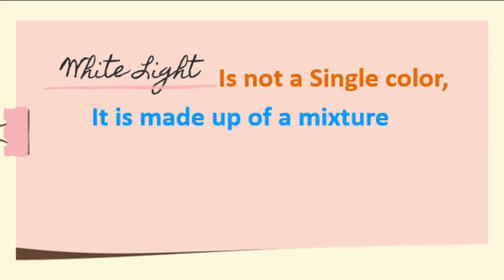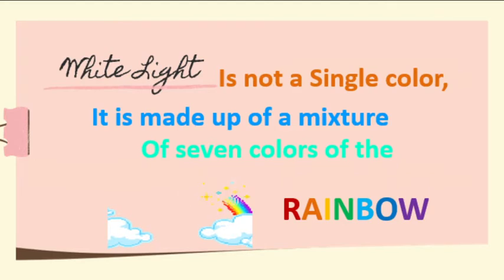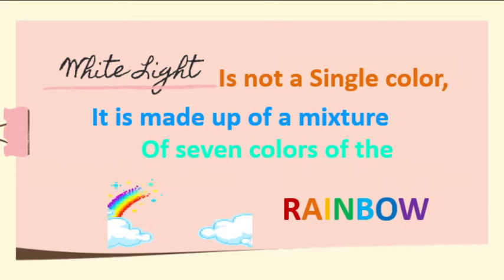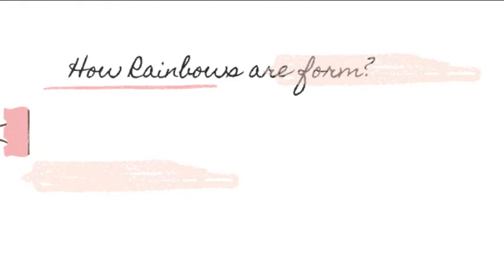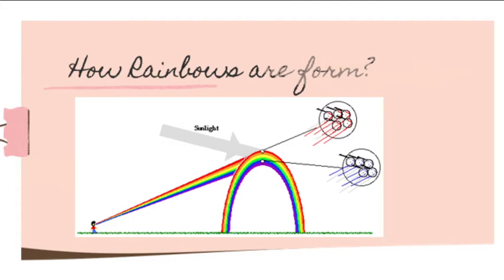White light is not a single color — it is made up of a mixture of seven colors of the rainbow. Light is composed of colors of different frequencies and wavelengths, and the arrangement of colors of light shows the order of colors corresponding to their energy. Light does not need a medium to propagate, but while it moves at maximum speed in a vacuum, it slows down depending on the medium it travels through.